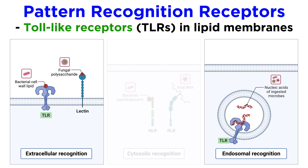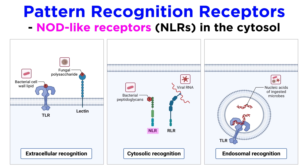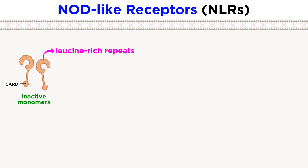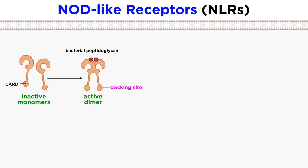TLRs are not the only pattern recognition receptors used by mammalian cells. While TLRs are confined to lipid membranes, there is another family of pattern recognition receptors that can sense microbial products in host cell cytoplasm. These receptors are called NOD-like receptors, or NLRs. NLRs are particularly good at sensing intracellular bacteria, and are often expressed in epithelial cells and myeloid cells. Like TLRs, NLRs are also ancient pathogen sensors with leucine-rich repeats.